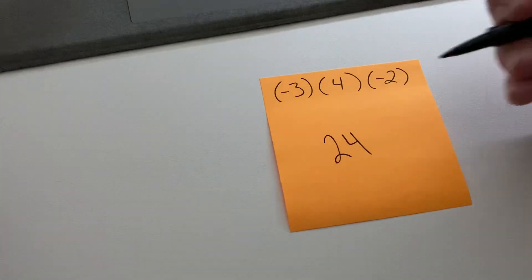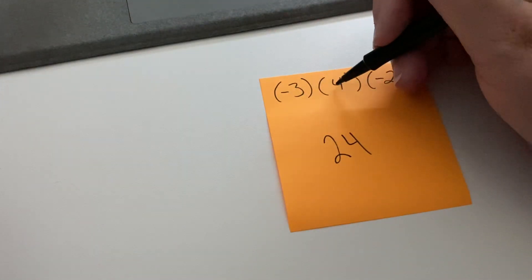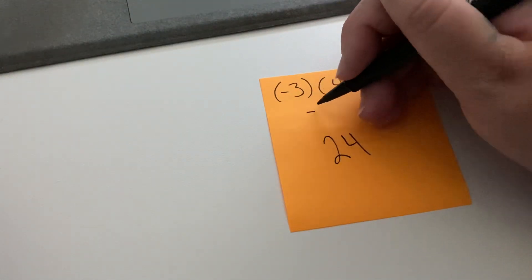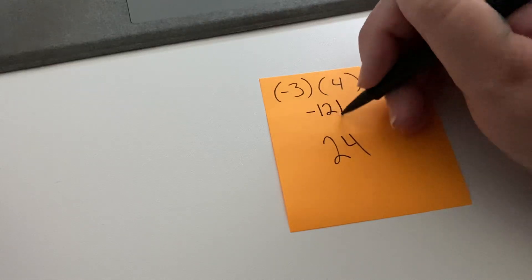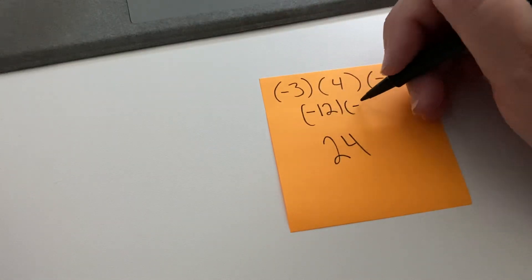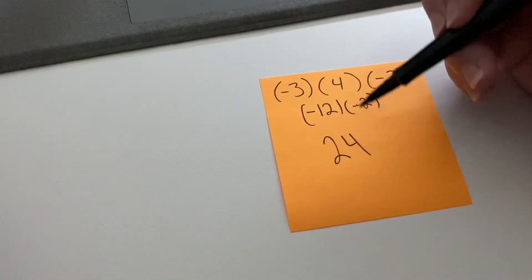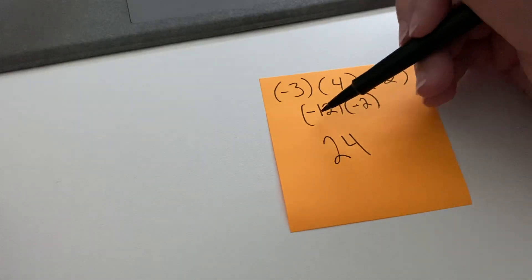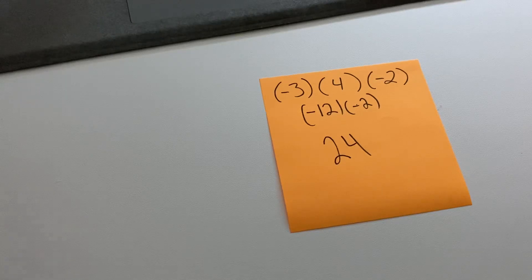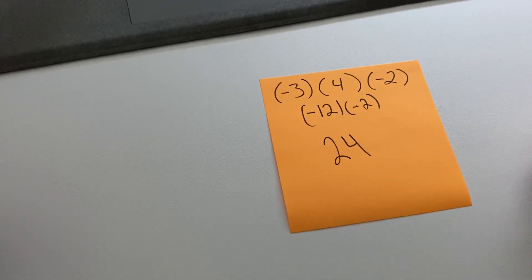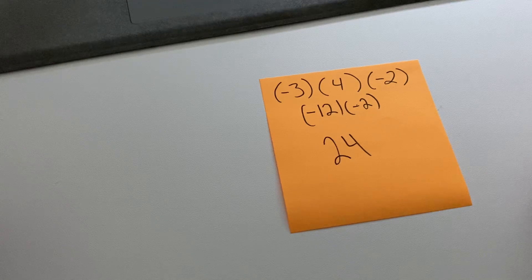If you want to see the process here, this is like doing negative three times four, which would have been negative 12, and then we could have times that by negative two, and negative times a negative is a positive, and two times 12 is 24. So if you want to see it a little bit more written out. If there are small numbers like this, then you probably can just do the mental math.